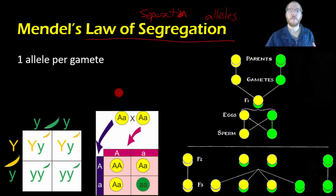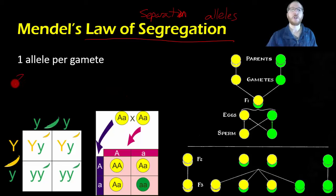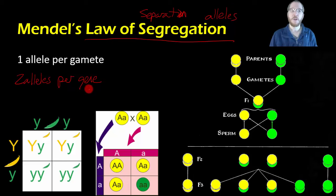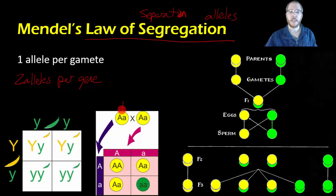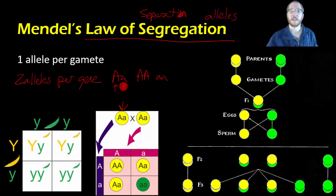What Mendel discovered is that each individual plant had two alleles per characteristic — or per gene, because that's the word we now use. He would have said two traits per characteristic; we say two alleles per gene. You might see this written like big A, little a, or big A, big A, or little a, little a. These are our possibilities, and each of these represents an allele.